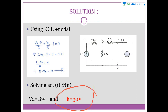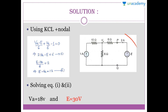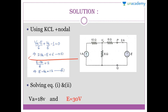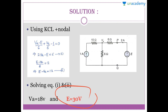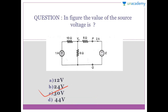So the voltage E is 30 volts. All you need to do is apply KCL nodal analysis, form the equations knowing the current values, and solve. We get two equations and two variables; solving gives E equals 30 volts, so option C is the correct answer. I hope you like this lecture pattern — if you do, write a comment in the comment box. Thank you.